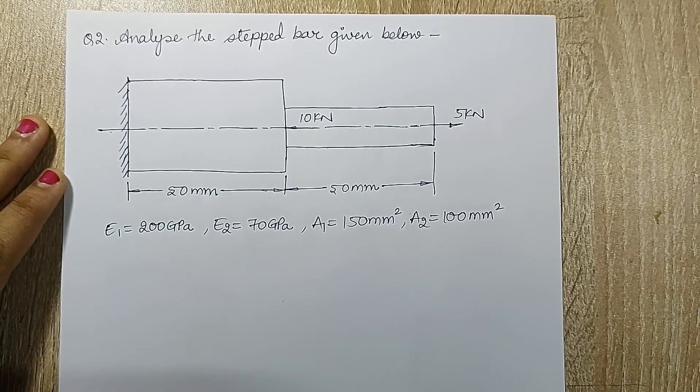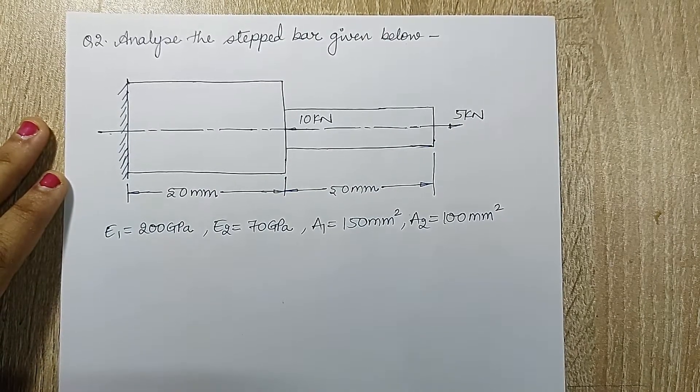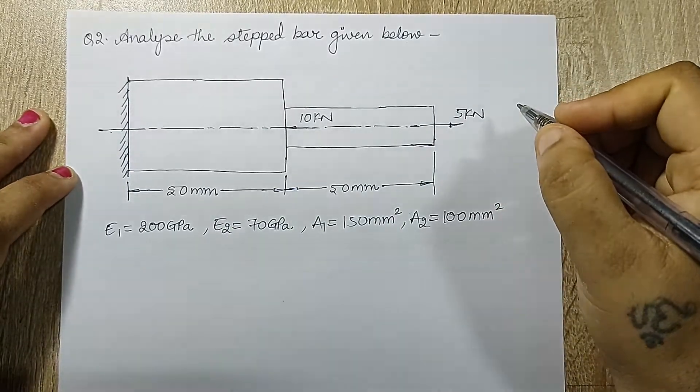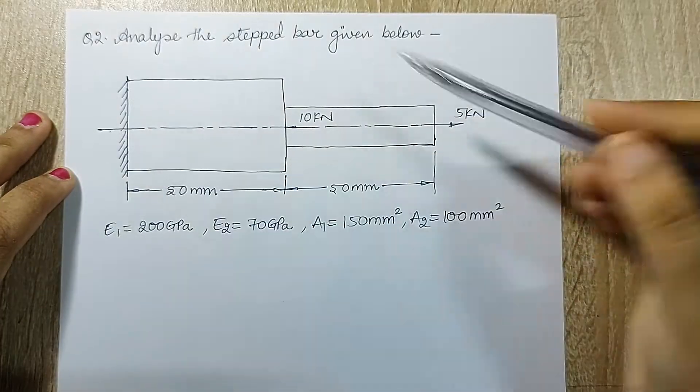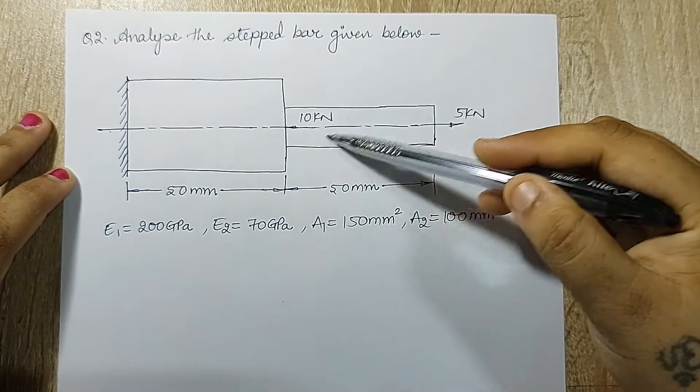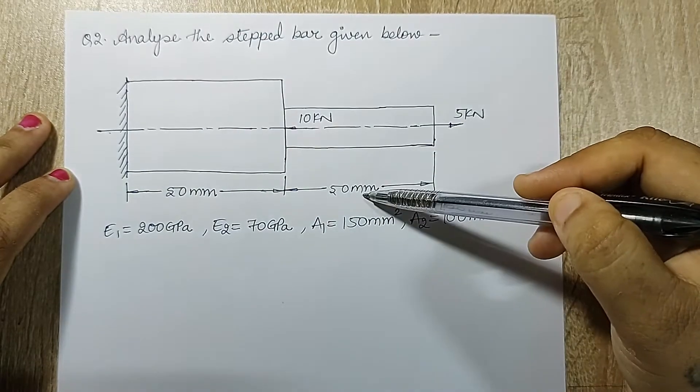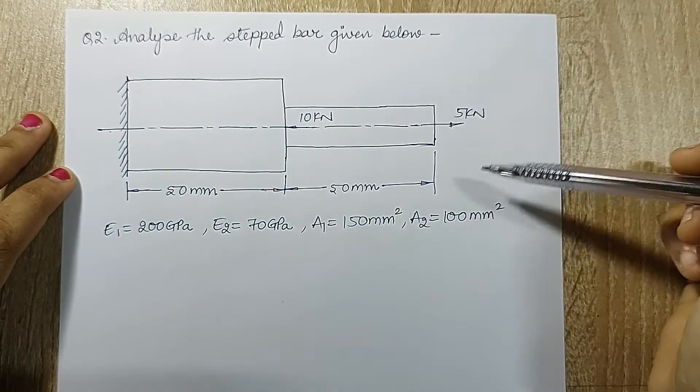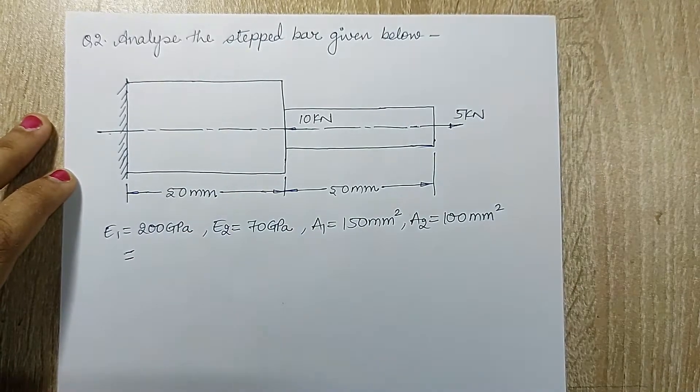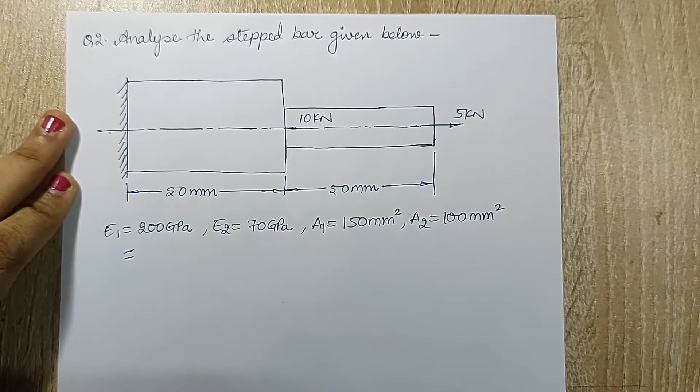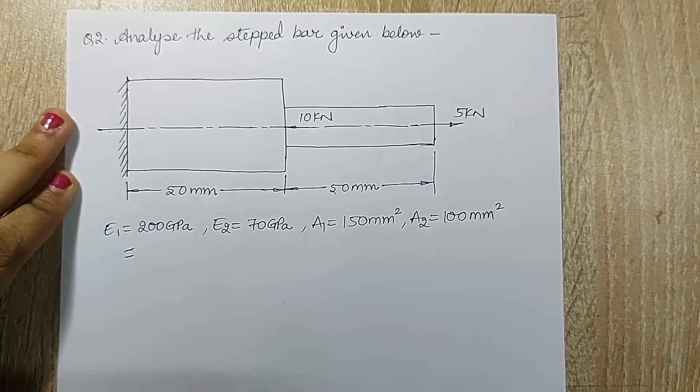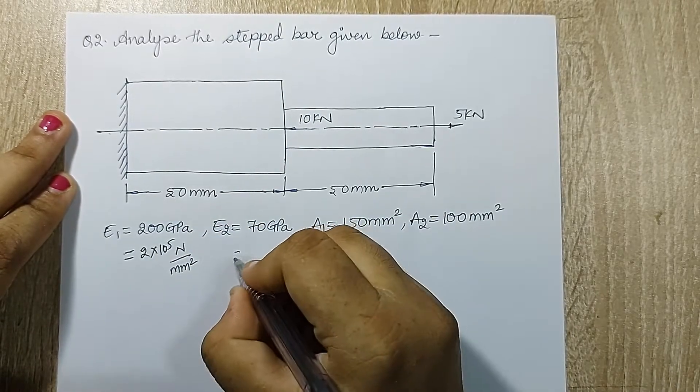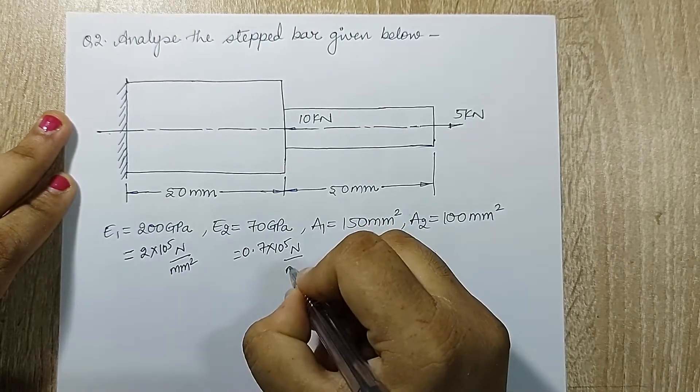Hello everyone, welcome to the next session of finite element analysis. I'm solving question 2 of direct application of EME. Analyze the step bar given below. This end is fixed and here there's a load of 5kN tensile. Here I can see a 10kN compressive type. The length of the two bars are given to me, their value of Young's modulus and area is also given. Now before solving the numerical I'll do a quick calculation. The value of E is 200 gigapascal. I want to convert everything into Newton and mm, so this will be 2 into 10 raised to 5 Newton per mm square and this value will be 0.7 into 10 raised to 5 Newton per mm square.